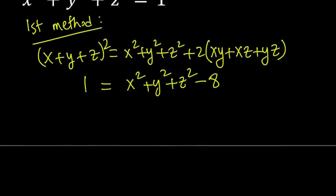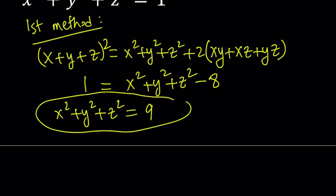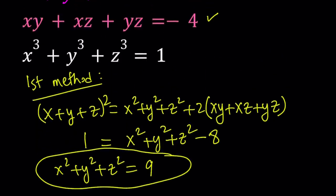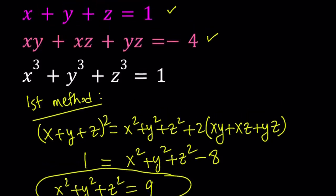So from here, if you isolate x squared plus y squared plus z squared, you're going to get 9. Another motivation behind finding x squared plus y squared plus z squared is to get to the sum of cubes, because we now know the sum of the squares and the sum of x, y, z.